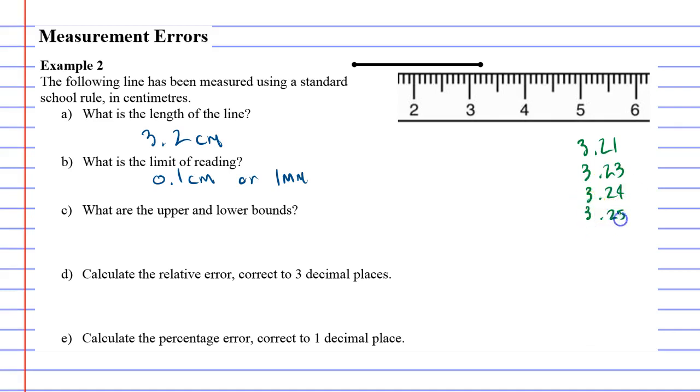3.25 we know would actually measure up as 3.3 centimeters, but as we discussed earlier, we usually just take this because we don't want to keep adding nines. So the upper limit is 3.25. Let's look at the lower bounds.